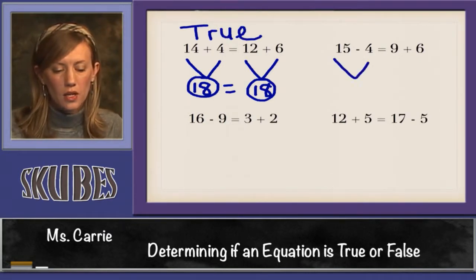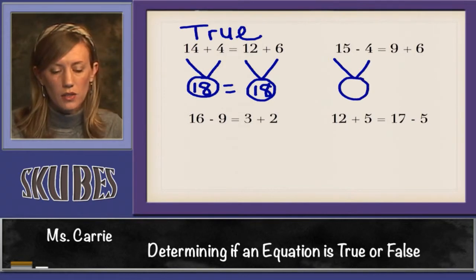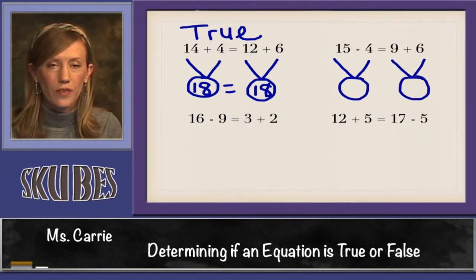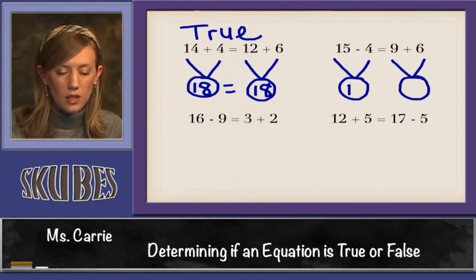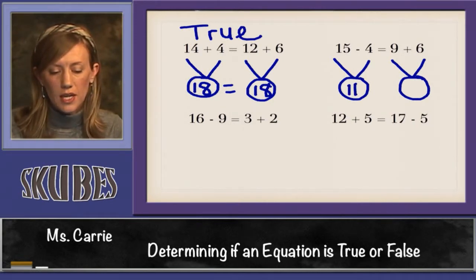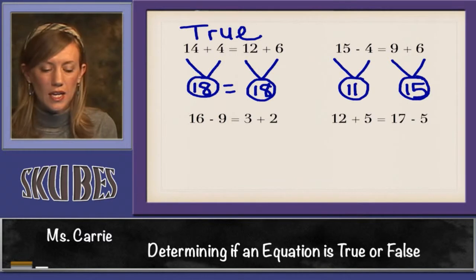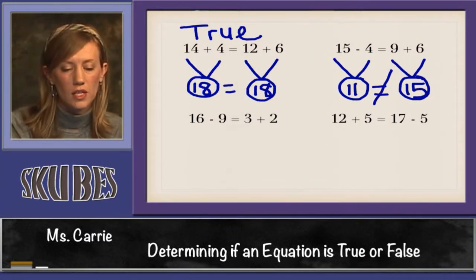Let's try this one. We have 15 minus 4 and 9 plus 6. Well 15 minus 4 is 11 and 9 plus 6 is 15. Are these equal? No they aren't. This is false.